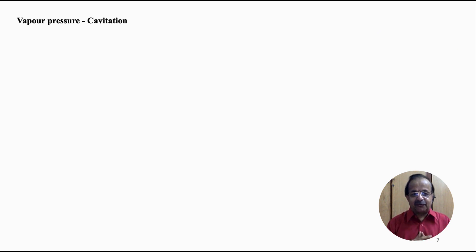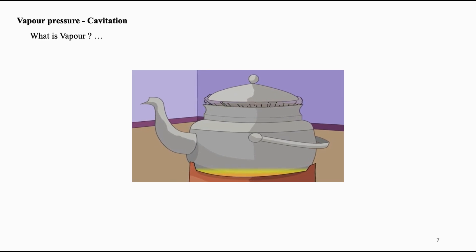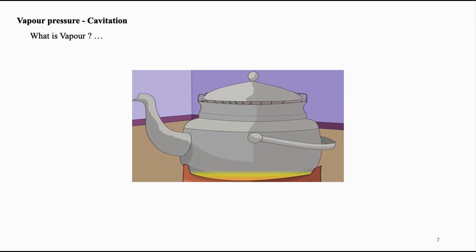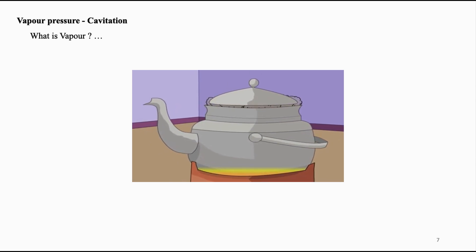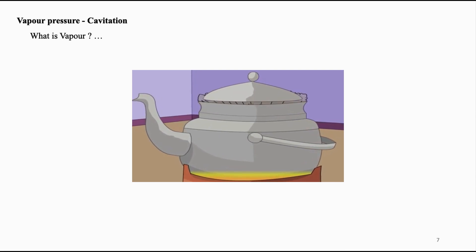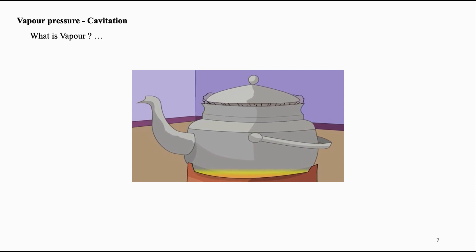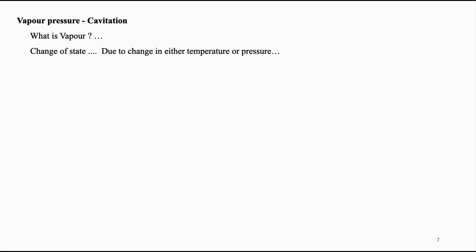Let us discuss another important concept: vapour pressure, followed by cavitation. Have you observed a plate kept on a vessel in which water is being boiled? You find it dancing — somebody must be making the plate dance. Yes, it is vapour. As discussed in the first part of this series, vapour is neither a liquid nor a gas, though it enjoys all the properties of a gaseous state. This occurs due to change of state either due to change in temperature or change in pressure.